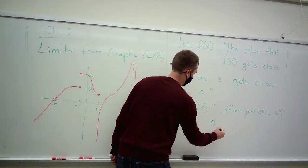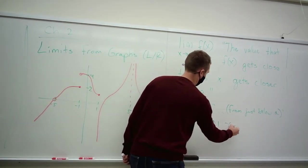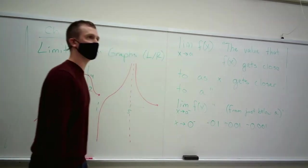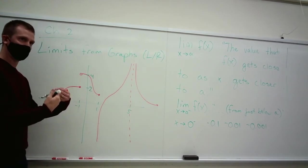So like for example, negative 0.1, negative 0.01, negative 0.001, etc. They're getting closer to zero, but they're also smaller than zero.